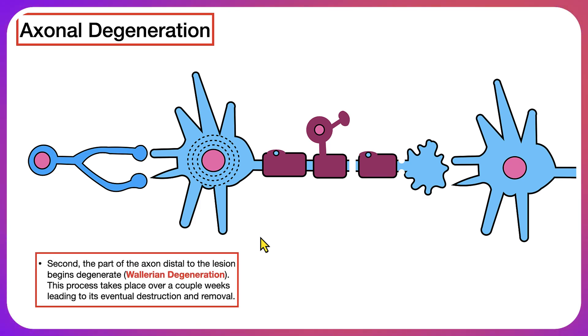The second step is going to be Wallerian degeneration. Wallerian degeneration is when the part of the axon distal to the lesion degenerates. This process takes place over a couple of weeks and it leads to the eventual destruction and removal of this axon distal to the lesion.